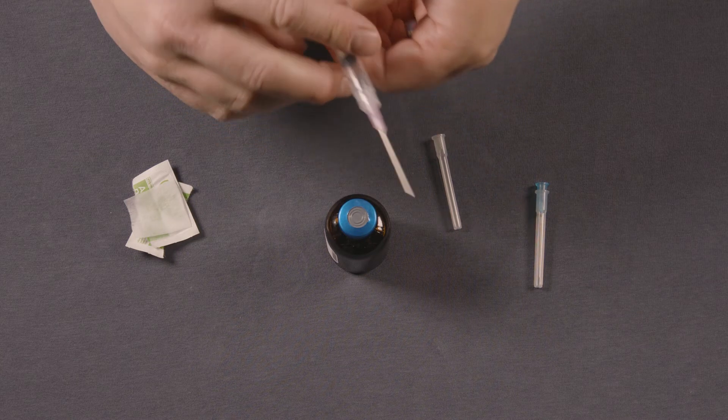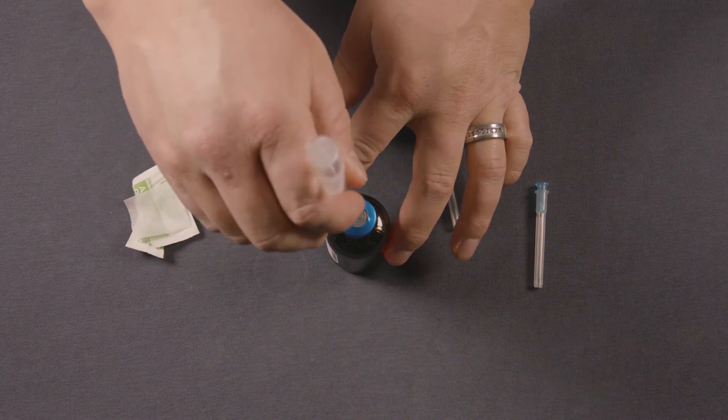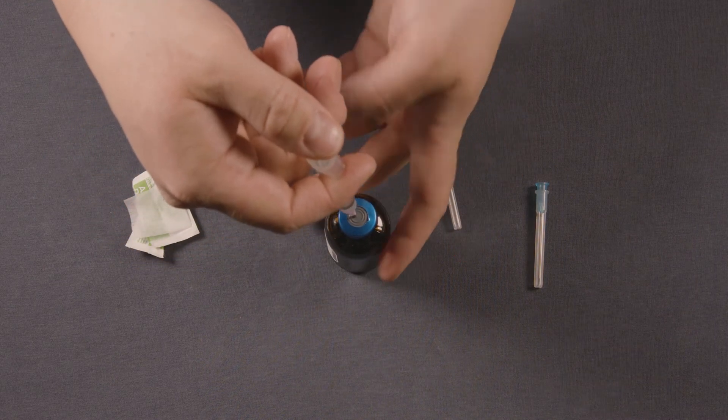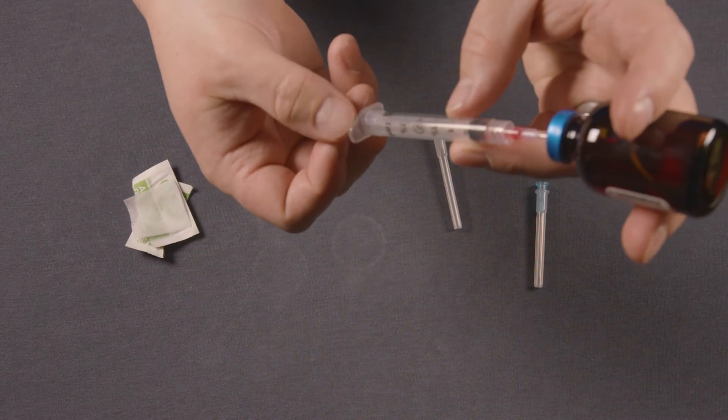You're going to put the needle into the vial pushing the air in and then flipping it upside down to be able to pull out the 1 ml of drug.